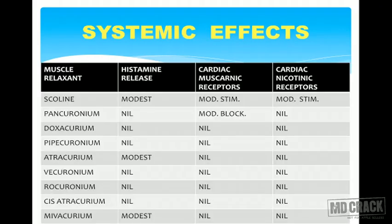Systemic effects are compared in a chart for all muscle relaxants, which is useful for exam questions comparing succinylcholine with pancuronium or vecuronium. For succinylcholine, there is modest histamine release, modest stimulation of cardiac muscarinic receptors, and moderate stimulation of cardiac nicotinic receptors.